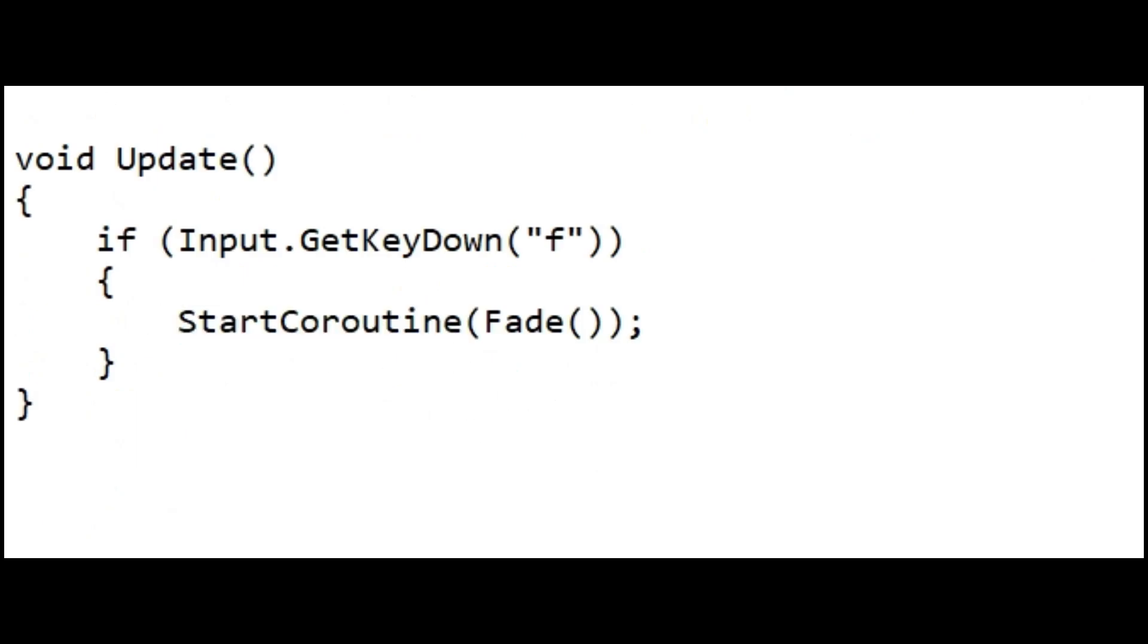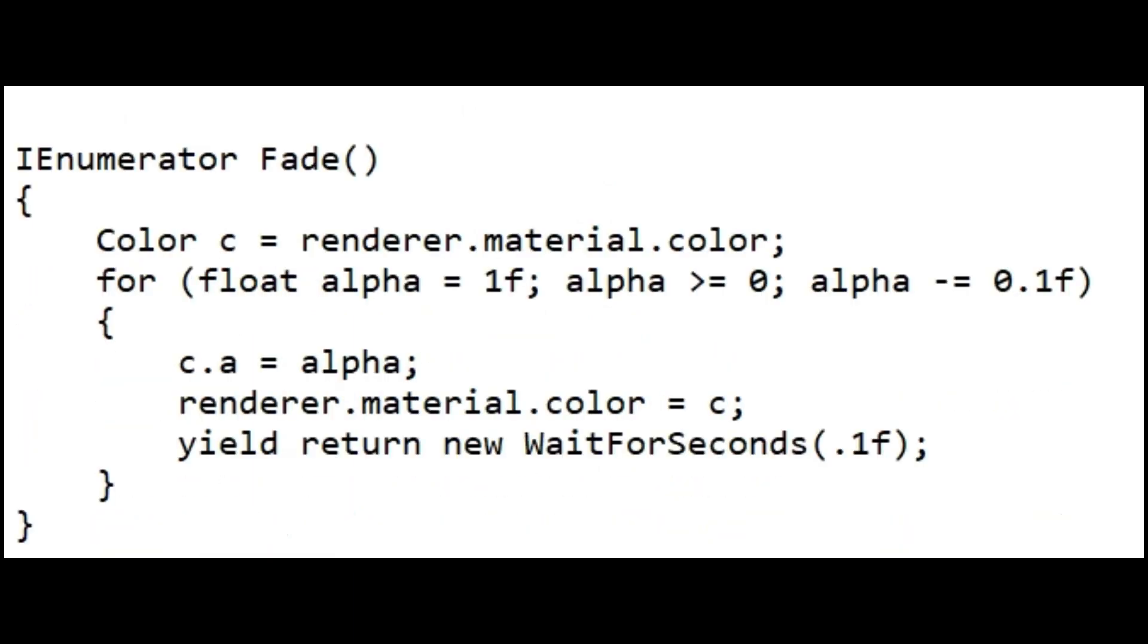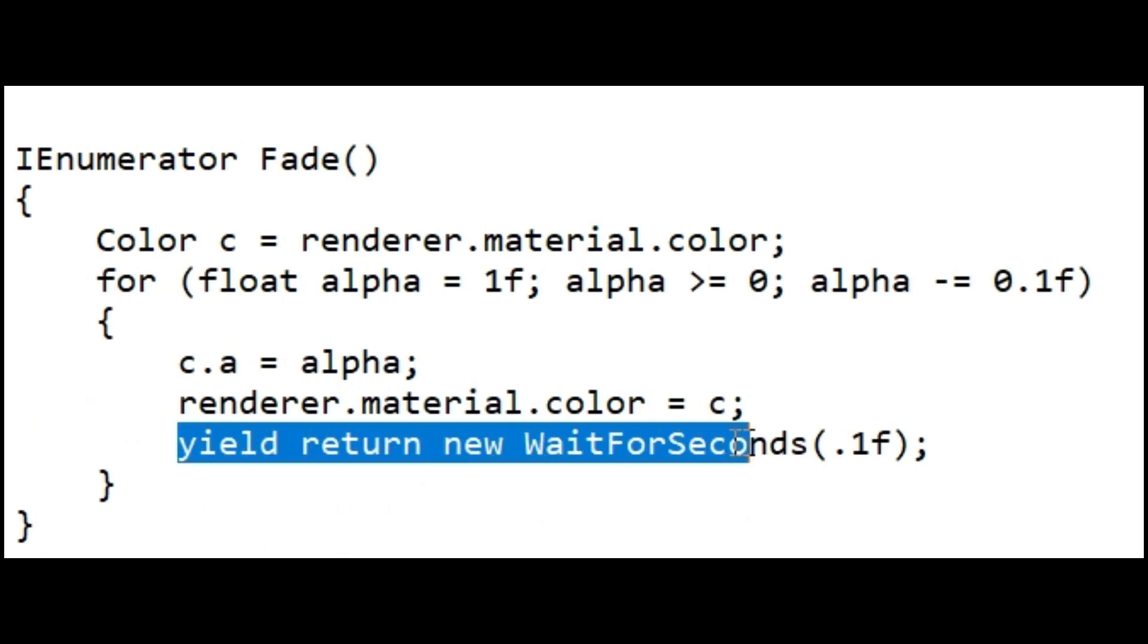By default, Unity resumes a coroutine on the frame after a yield statement. If you want to introduce a time delay, use WaitForSeconds. You can use WaitForSeconds to spread an effect over a period of time, and you can use it as an alternative to including the tasks in the update method.